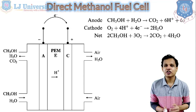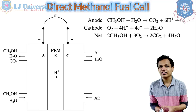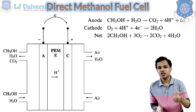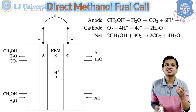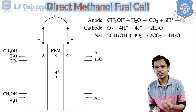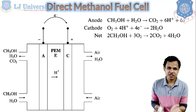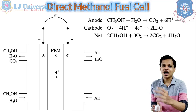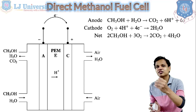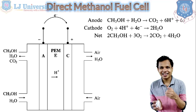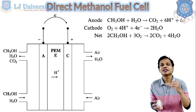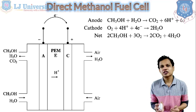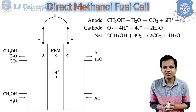The third type is the direct methanol fuel cell, which is slightly different as it does not supply hydrogen directly. Instead, methanol is supplied in place of hydrogen, and from the methanol the hydrogen is disintegrated for the chemical reaction. The electrolyte used is either trifluorosulfuric acid or a proton exchange membrane electrolyte. Both anode and cathode again use platinum metal.